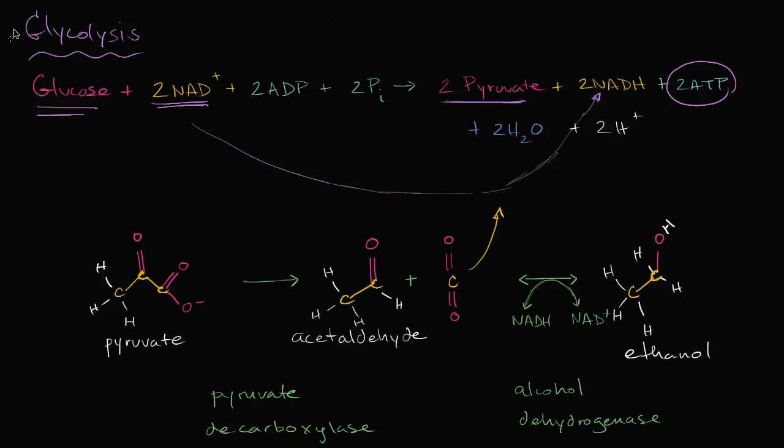We've already seen multiple times that glycolysis is the process where we start with a glucose molecule, which has six carbons, and we're able to break it down into two pyruvate molecules, which each have three carbons. And in the process of doing so, we produce a net of two ATPs. We reduce NAD plus to NADH. We're adding a hydride anion, so this is reduction.